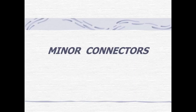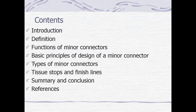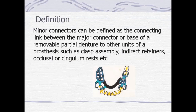Today we will discuss in detail about minor connectors. The contents include: introduction, definition, functions, basic principles of design, different types of minor connectors, tissue stops, finish lines, summary and conclusion. Minor connectors can be defined as the connecting link between the major connector or base of a removable partial denture to other units such as clasp assembly, indirect retainers, occlusal rests, etc. This is the definition according to GPT-9.